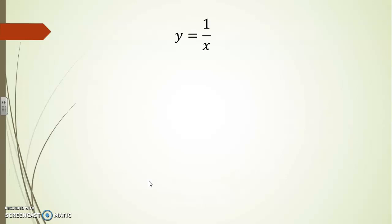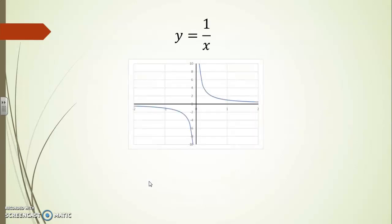y equals 1 over x is the basic rational function. Here is its graph and one of the main features you should observe is that it is undefined for x equals 0. Obviously division by 0 is forbidden. x equals 0 generates a vertical asymptote and you can tell by the infinite behavior that this function has in the vicinity of x equals 0.